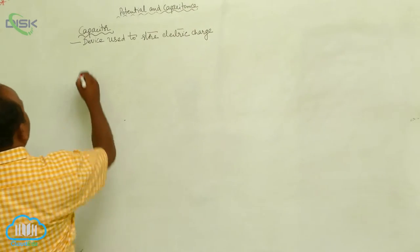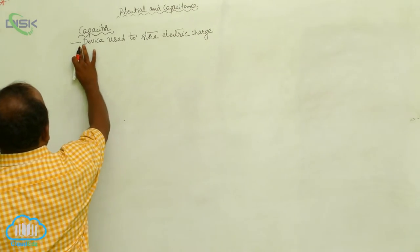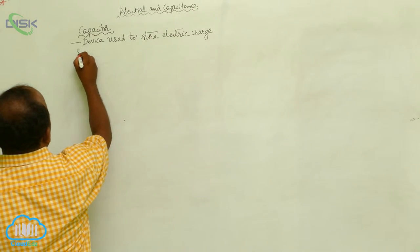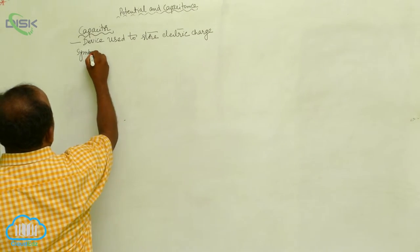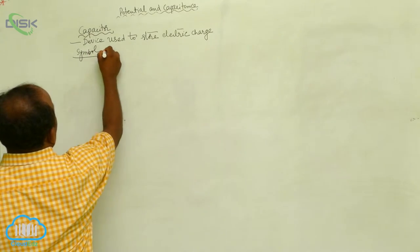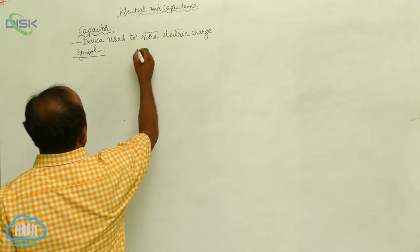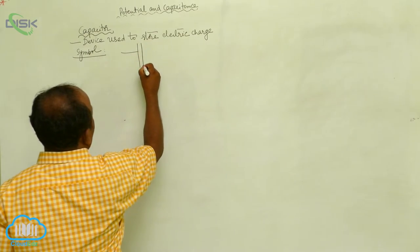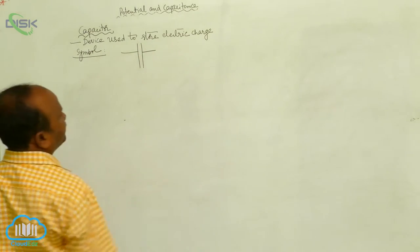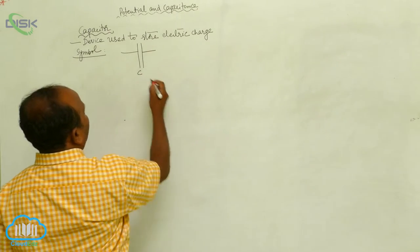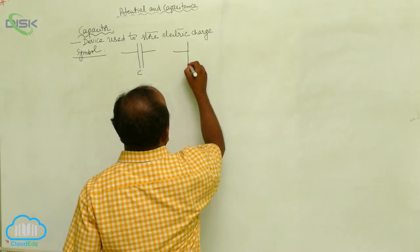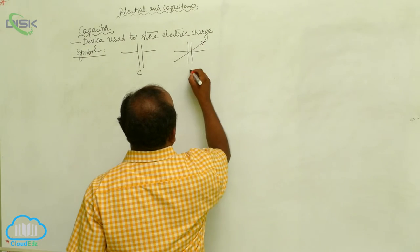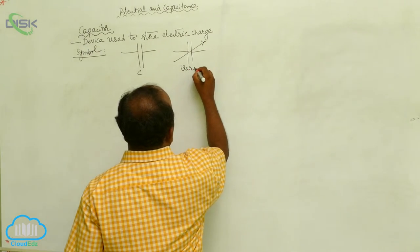Now, what is the symbol of capacitors? This is the symbol of capacitor. There is another symbol with an arrow mark — this is called a variable capacitor.